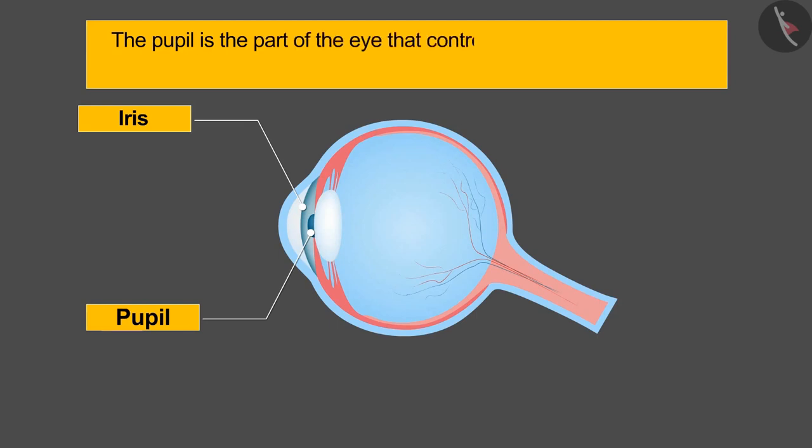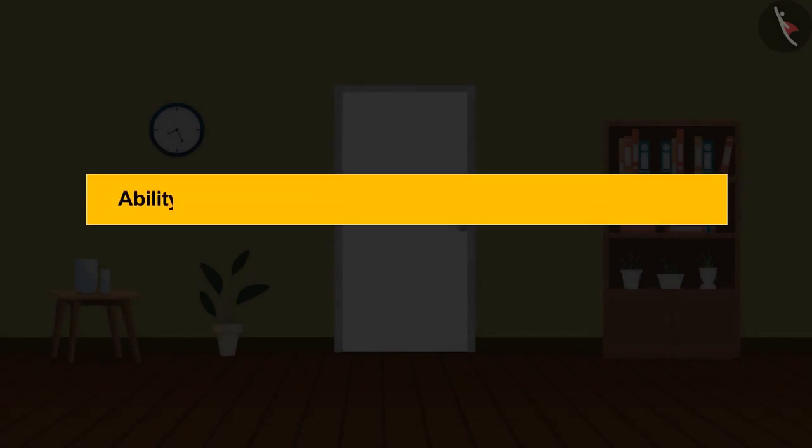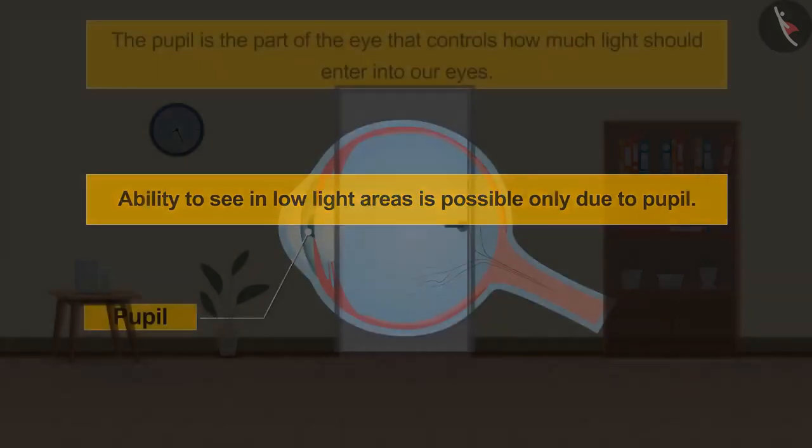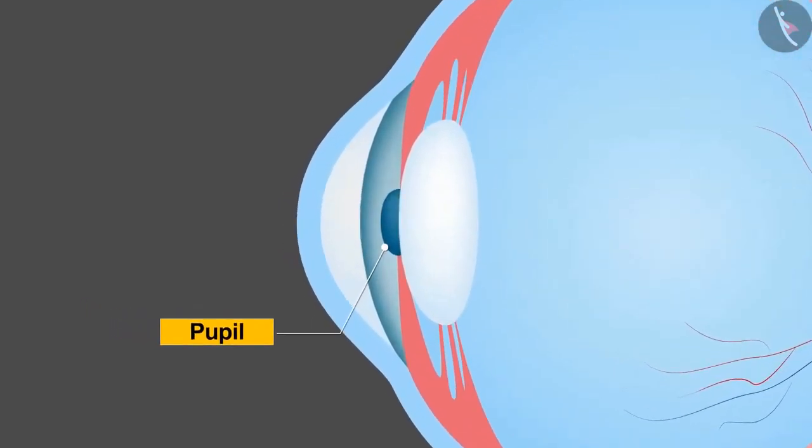The pupil is the part of the eye that controls how much light should enter into our eyes. When we enter a dark room or a room with low light, for some time we do not see anything, then slowly everything starts to appear. Ability to see in low light areas is possible only due to pupil. It actually expands and allows more light to enter into the eyes.